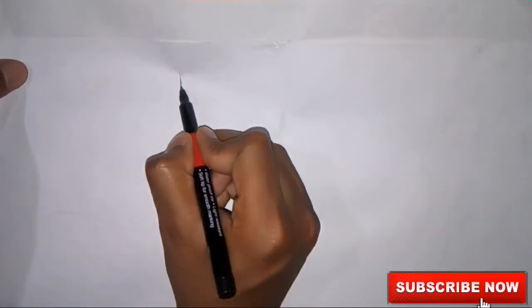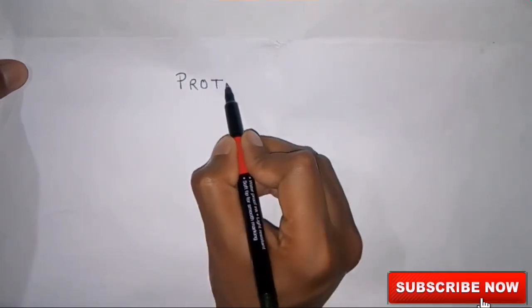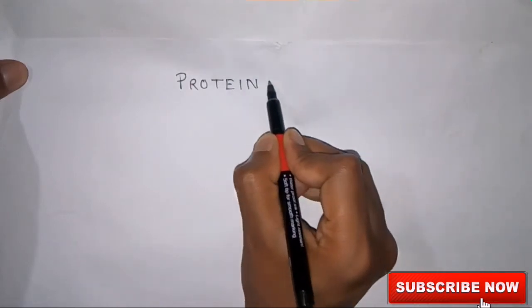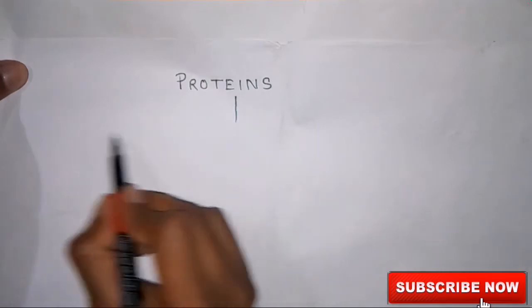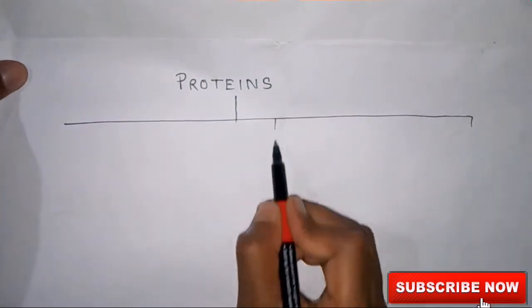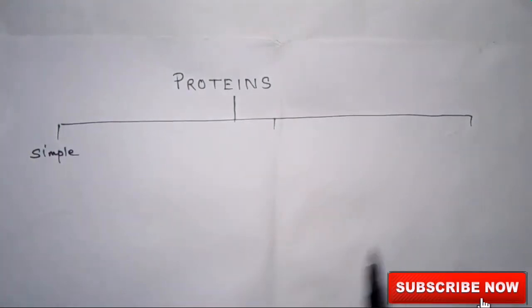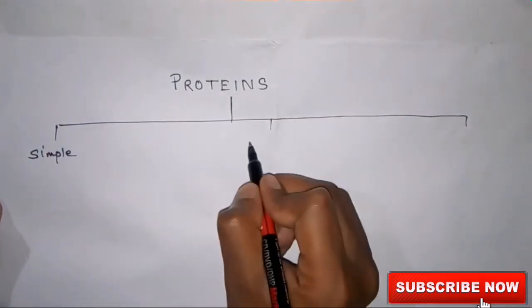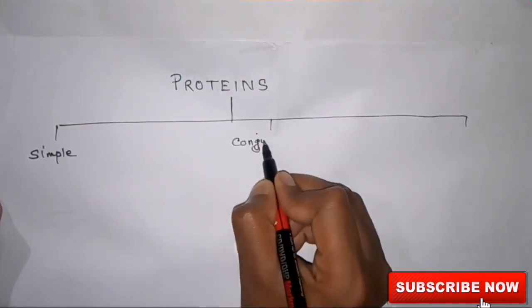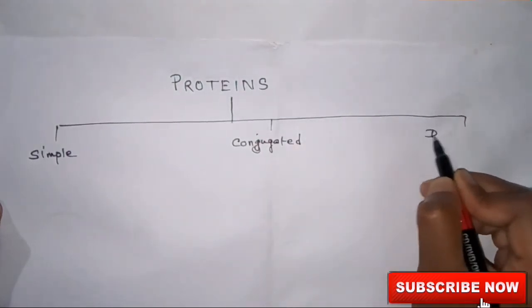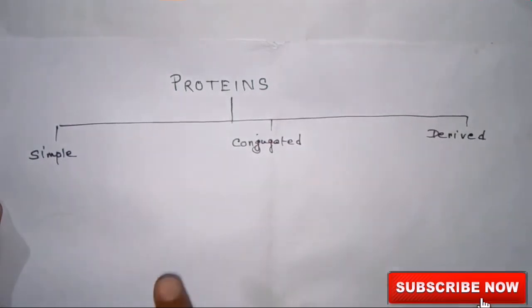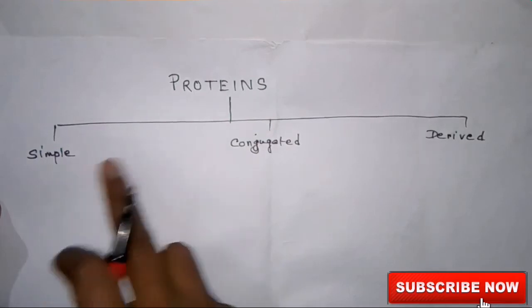Hello, hope you all are well. So today in this video we'll discuss about the classification of proteins. Protein is classified into three types: number one, simple; number two, conjugated; and number three, derived protein.